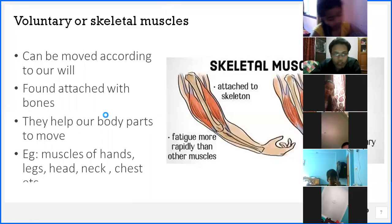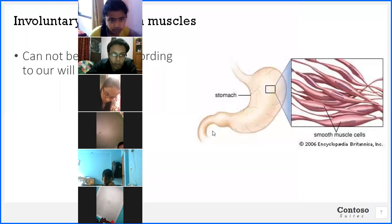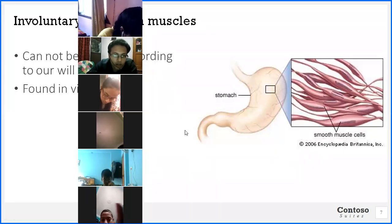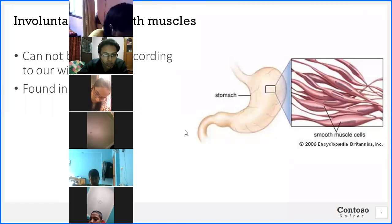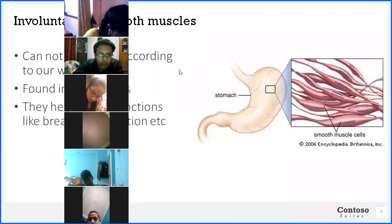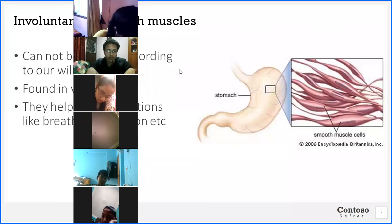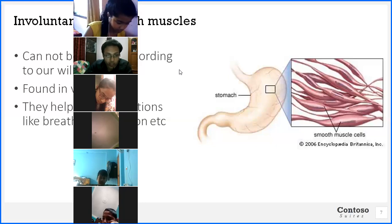Now let's move on to the next type: involuntary or smooth muscles. The example is the stomach — it cannot be moved according to our will. Involuntary muscles are found in the vital organs. Compare this with voluntary muscles: voluntary muscles are found attached with the skeleton, whereas involuntary muscles are found in the vital organs. They help in vital functions like breathing and digestion. Key differences include whether you can move them by will, where they are found, and their function.